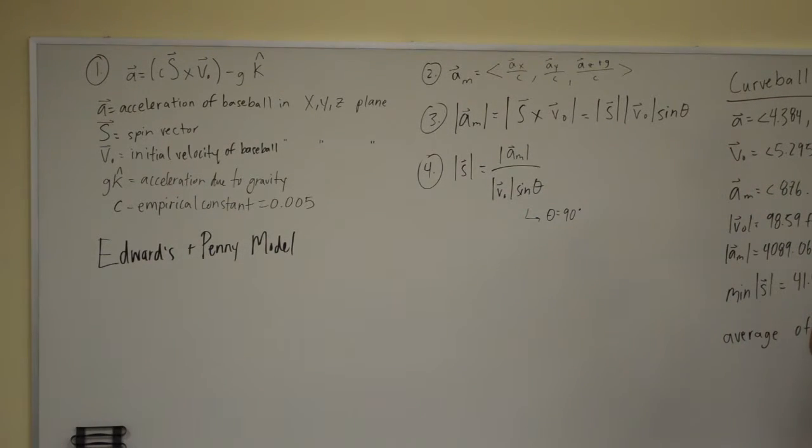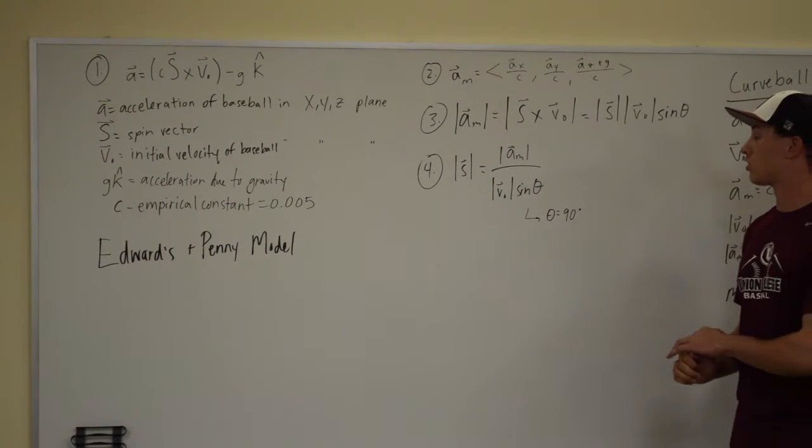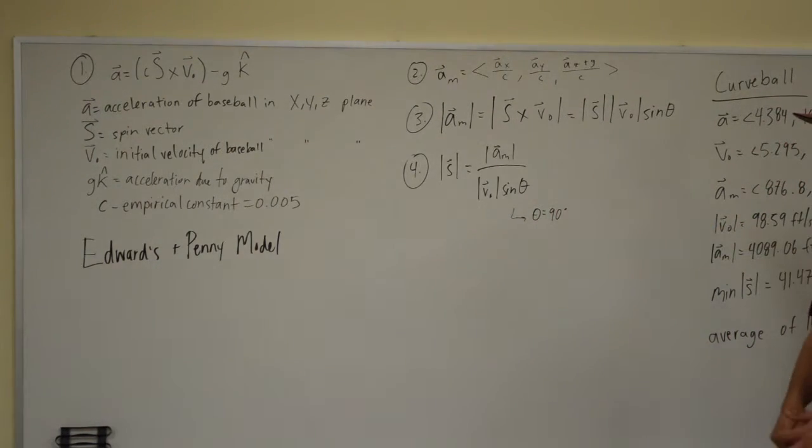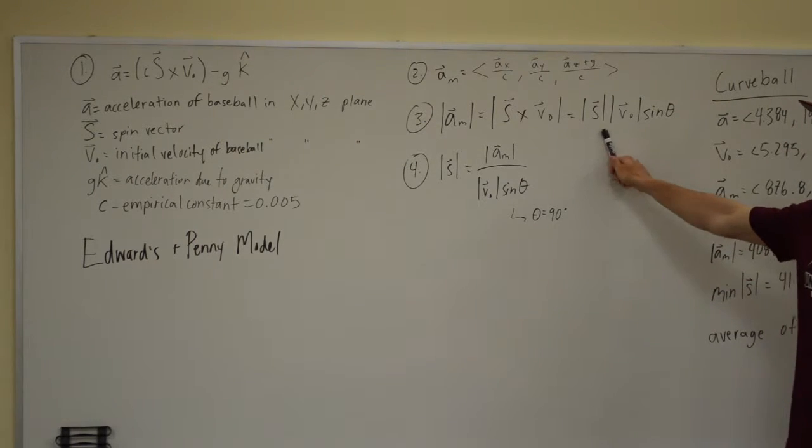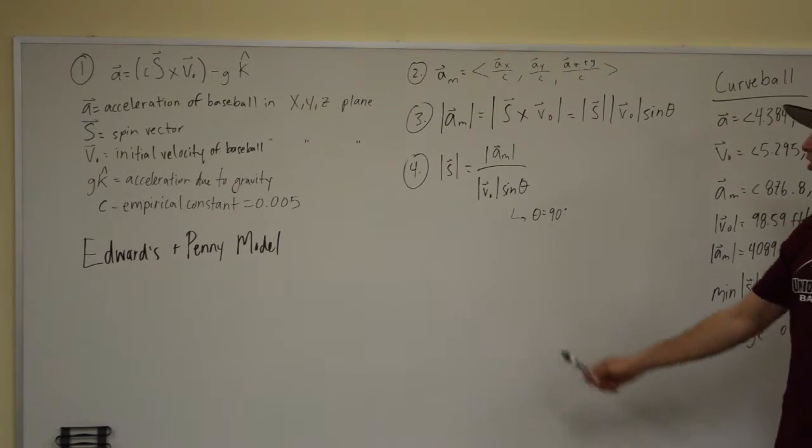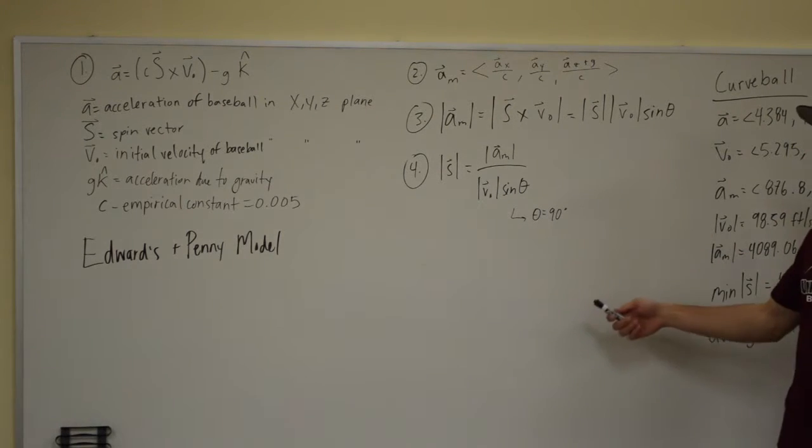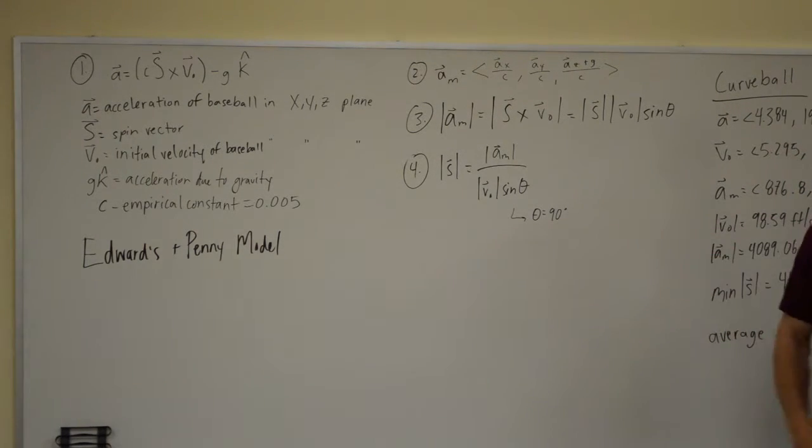Since we don't have any data for theta, which is the angle between the spin vector and the initial velocity vector, we simply took theta to be equal to 90 degrees because the sine of 90 degrees is equal to 1, and that will produce the largest value for the magnitude of s.